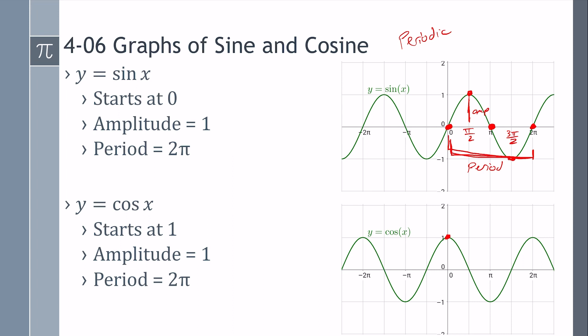For cosine, you have a maximum at zero, so we have a maximum at the period, two pi. Halfway in between, we have the minimum. Halfway between those are the x-intercepts of pi over two and three pi over two. Those are the key points, and those will be the main points you'll be graphing when you graph sine and cosine.